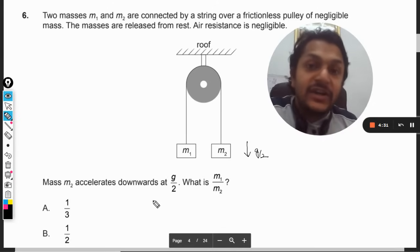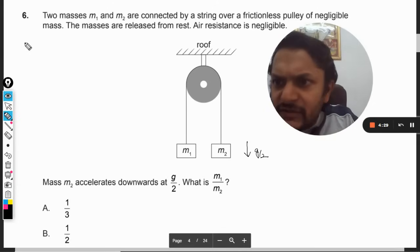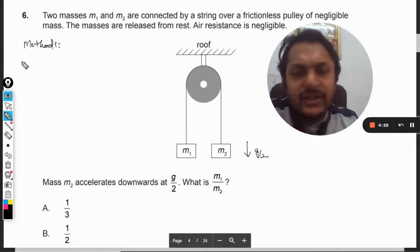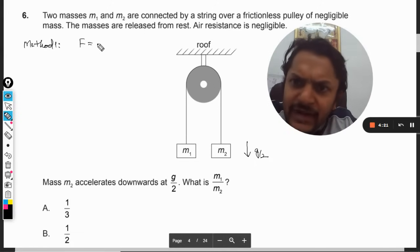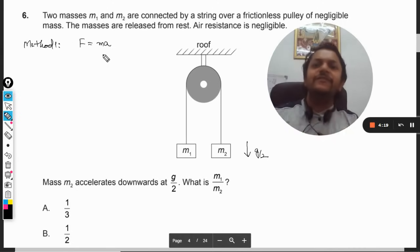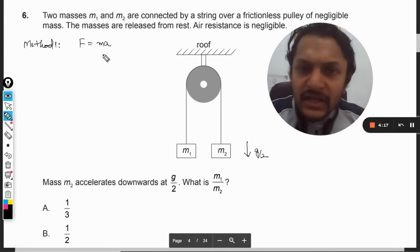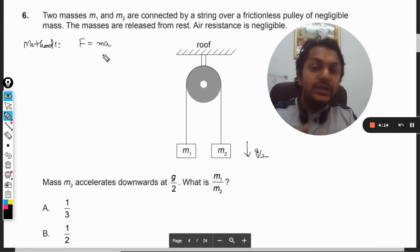In this question I'm going to give you two different methods. Please be careful here; both methods are very important and very easy. Method number one: I'm applying a simple formula here, F equals ma.